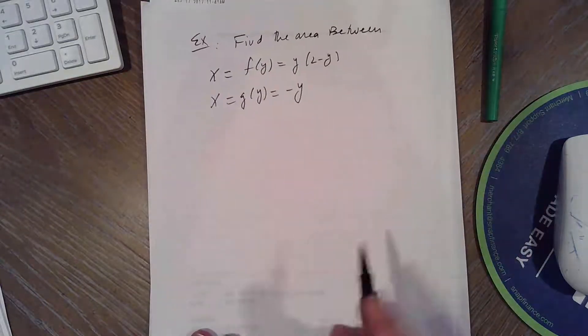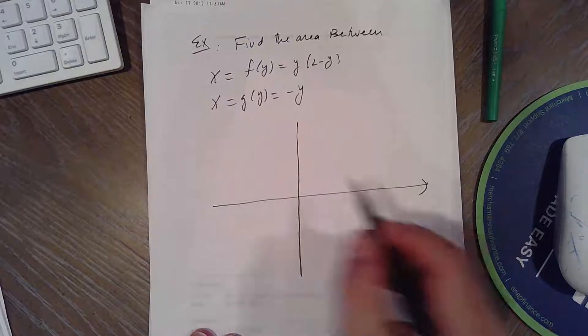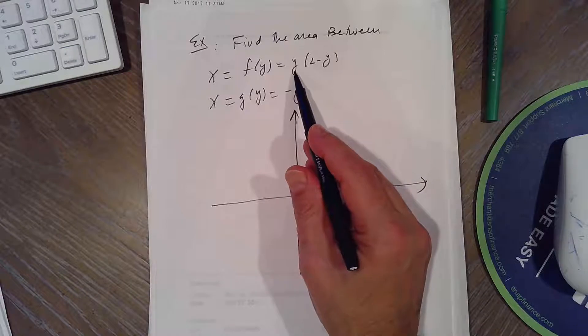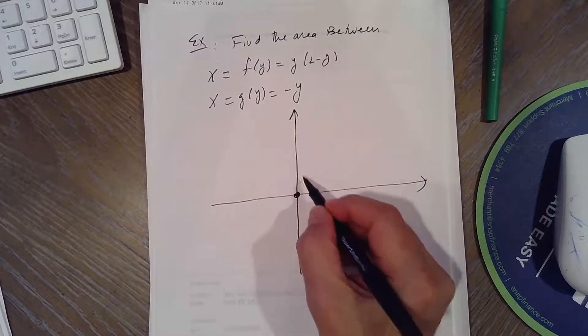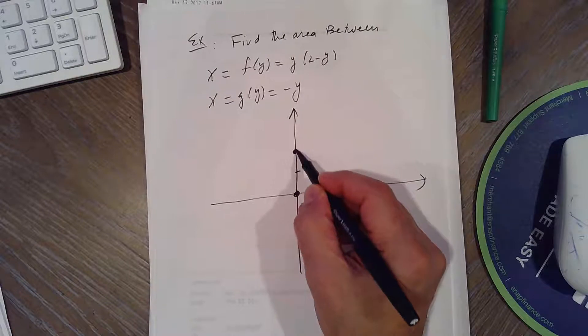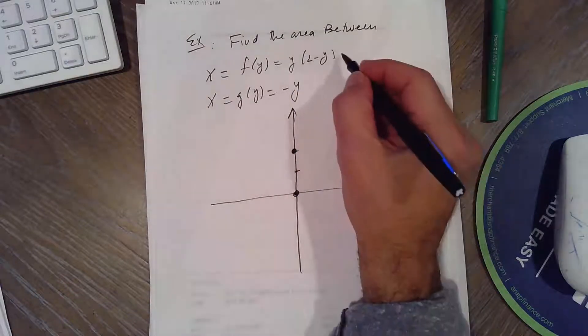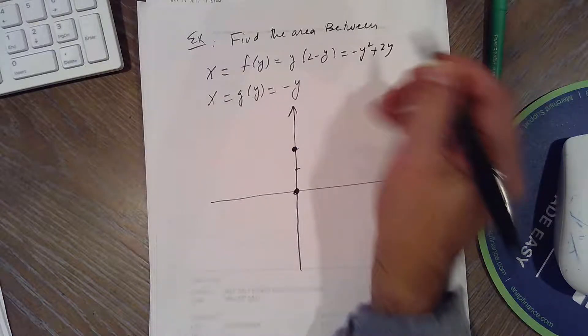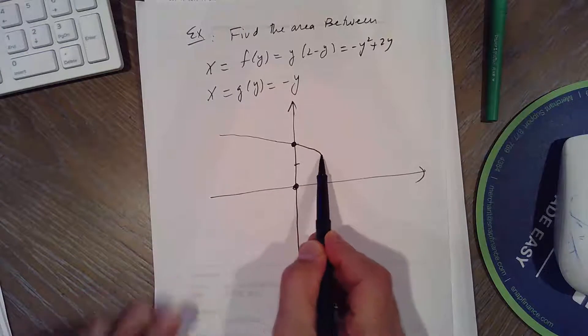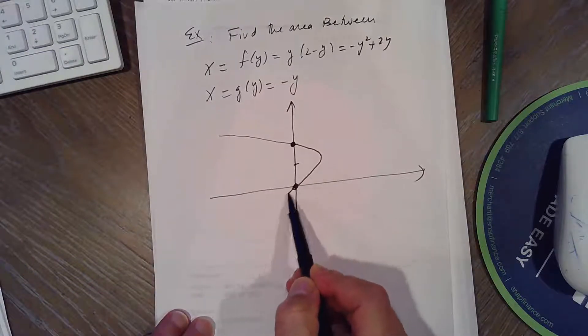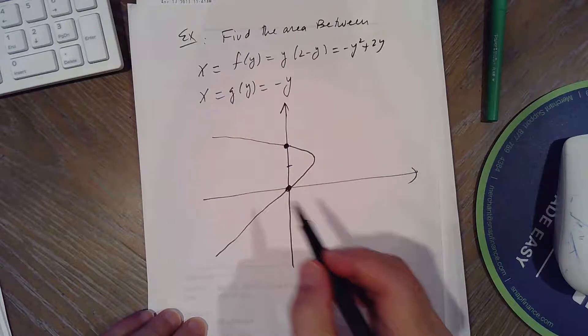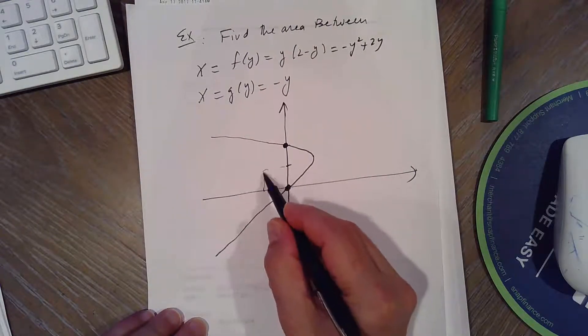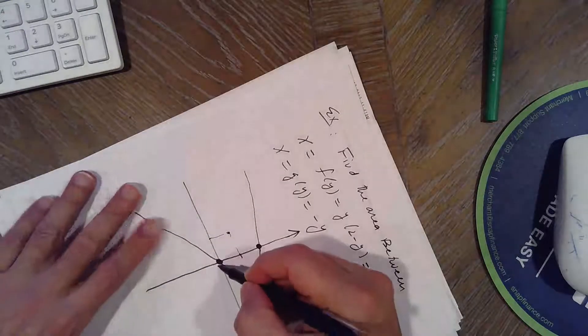So if you graph these two functions, X equals Y times 2 minus Y, Y equals 0, X is 0, Y is 2, X is 0, and it's a parabola that opens, it's negative Y squared plus 2Y, so it's going to open sideways to the left. So it's going to be somewhat like this, and then X equals negative Y at 0, 0, and Y is 1, it's negative 1, so it will be somewhat like this.